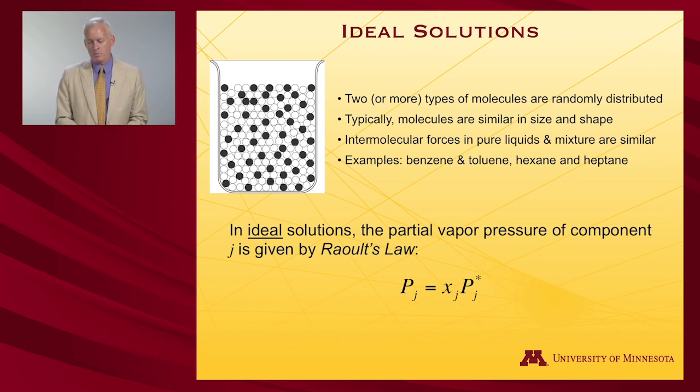In an ideal solution, and indeed the definition of an ideal solution, the partial vapor pressure of component j is given by what's called Raoult's law. It says that the vapor pressure of that component above the solution is equal to the mole fraction of that component in the solution times the pure vapor pressure of the pure liquid.